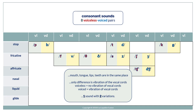What is a voiceless-voiced consonant sound pair? In a voiceless-voiced sound pair, you make the shape of the sound with your mouth, tongue, and lips. Then for one sound, you make it voiceless with no vibration of the vocal cords. Then, don't change anything in your mouth and simply vibrate your vocal cords and you get the voiced sound. The only difference between the two sounds is voicing — so it's one sound with two variations.